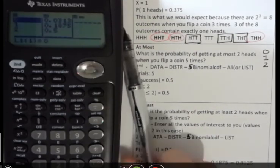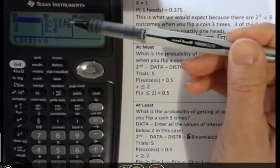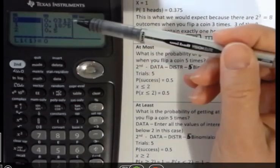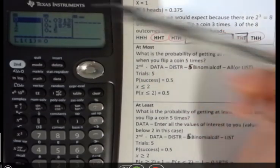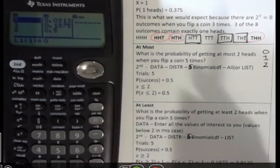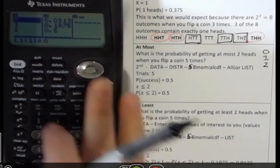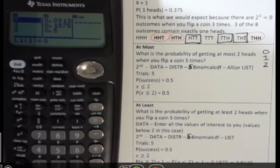And then I hit calculate. You can see a little more clearly when you do it this way that this is the zero heads, one heads, two heads. And it adds it up as it goes. So that having at most two, there's a half a chance or 0.5 chance I get at most two.